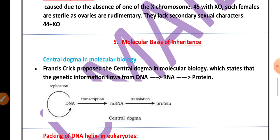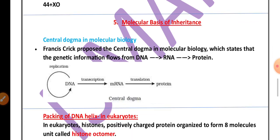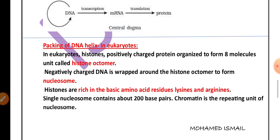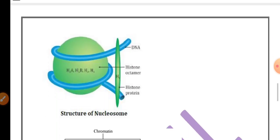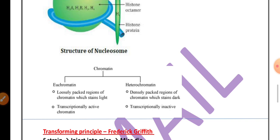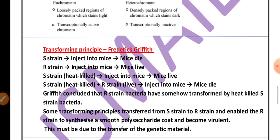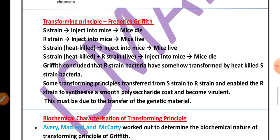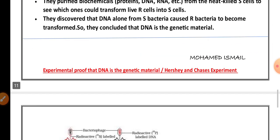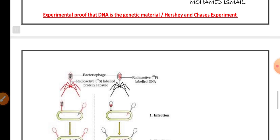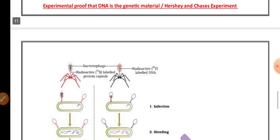From the fifth chapter, molecular basis of inheritance: the central dogma of molecular biology, packing of DNA helix in eukaryotes, the structure of nucleosome, and the difference between euchromatin and heterochromatin are important. For three marks, the transforming principle by Griffith and the biochemical characterization of the transforming principle are also very important. The experimental proof that DNA is a genetic material — the Hershey-Chase experiment — is also important.